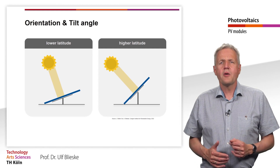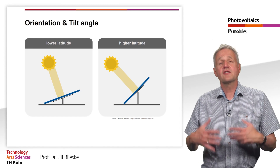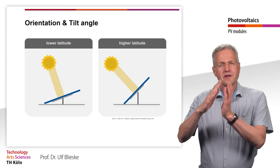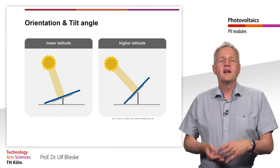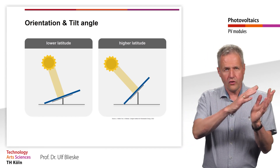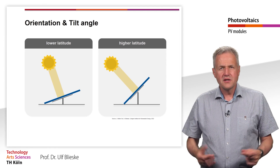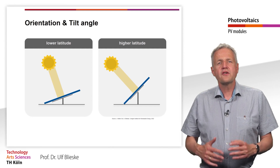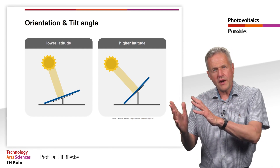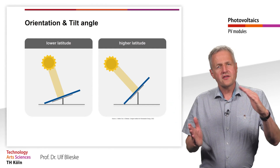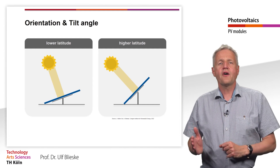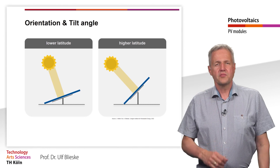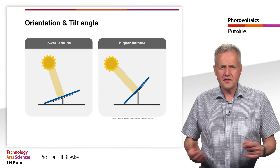The question of the optimal orientation can be answered relatively simply. In the northern hemisphere, the module should be orientated towards south; in the southern hemisphere towards the north. The optimum tilt angle is essentially based on the latitude of the location. The further you are away from the equator, the lower the sun is in the sky on an annual average, and the greater the tilt angle should be.